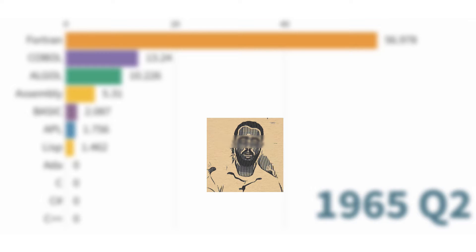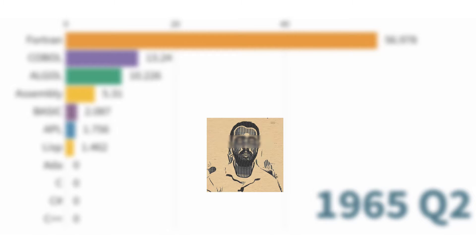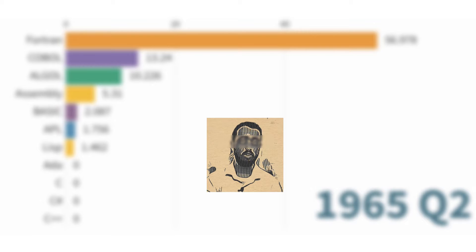Hello everyone, welcome to a new type of video. In this video you will see the timeline history of most popular programming languages from 1965 to 2023. At the end of this video you will see how I created this bar chart race. By watching how I created this chart, you will understand that this video is not auto-generated content and no reused content is used in it. Let's get started watching this bar chart race video.